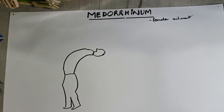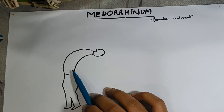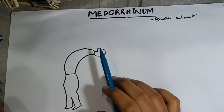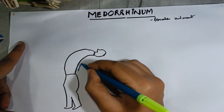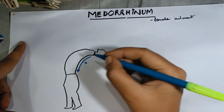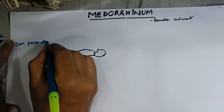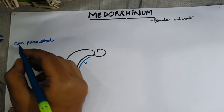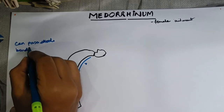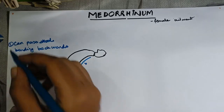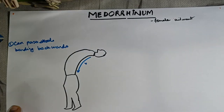So here is the picture. Here you see, this is a man standing bent backwards. Medorinam has this characteristic symptom that the person is bent backwards, and the person can pass stools only while bending backwards. This is the first keynote symptom of Medorinam.